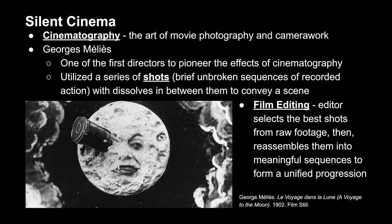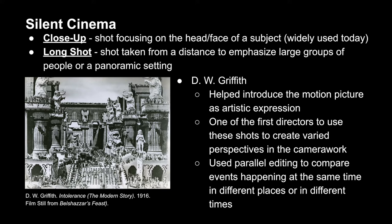During the era of silent cinema — a series of photographs sped up into apparent video with no audio beyond supplemental live performances — we start to see the use of close-ups and long shots. A close-up focuses primarily on the head and face of a subject and is one of the most widely used shots today. Long shots, taken from a far distance, emphasize either large groups of people or a panoramic setting, as seen in examples by DW Griffith, who utilized both close-ups and long shots to create a variety of perspectives.